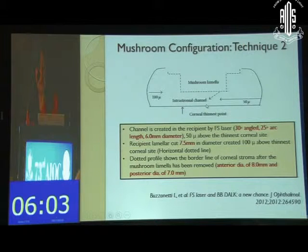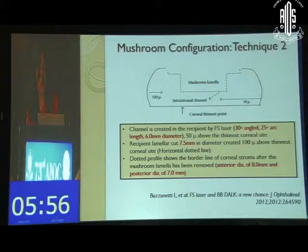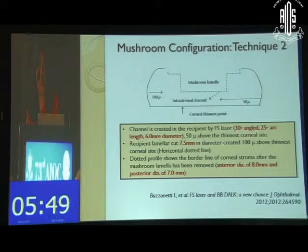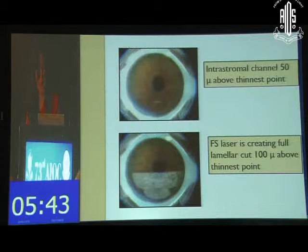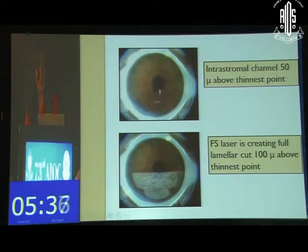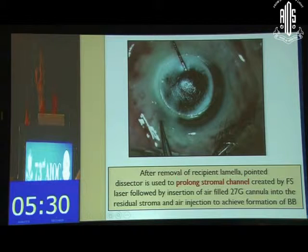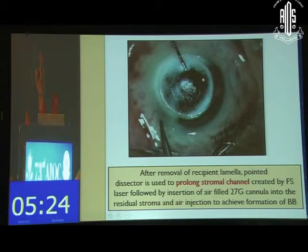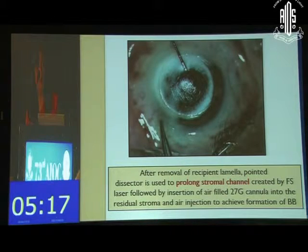This is followed by a lamellar cut 7.5 mm in diameter created 100 microns above the thinnest corneal site, and then the anterior diameter of the cornea is 8 mm and the posterior diameter is 7 mm. The intrastromal channel 50 microns above the thinnest point is created, then through that channel a 27-gauge cannula is inserted with air, and a big bubble is achieved.